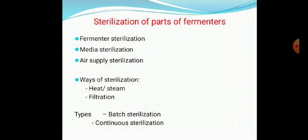Sterilization can be done for media in different ways. For example, if you want to sterilize 10,000 liters of media all at once, you call it batch sterilization. Suppose this media is supplied into the tank regularly — say 5,000 liters today and then 1,000 liters every day — it is called continuous fermentation, wherein we supply media continuously. In that case, we have to do continuous sterilization.